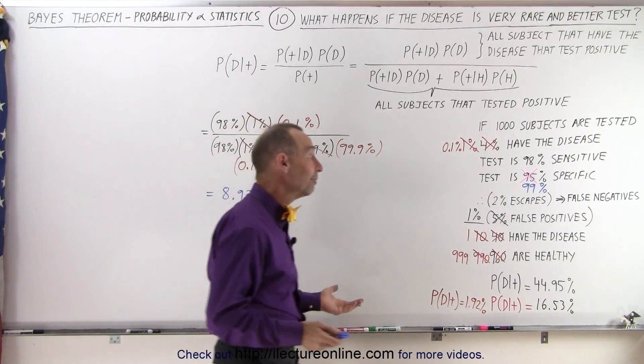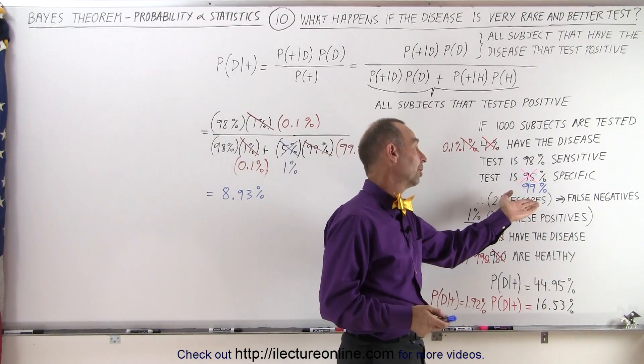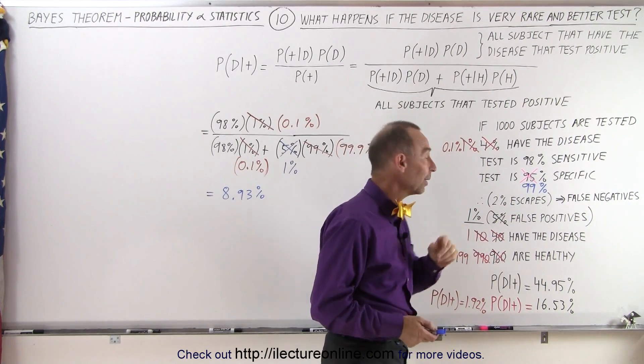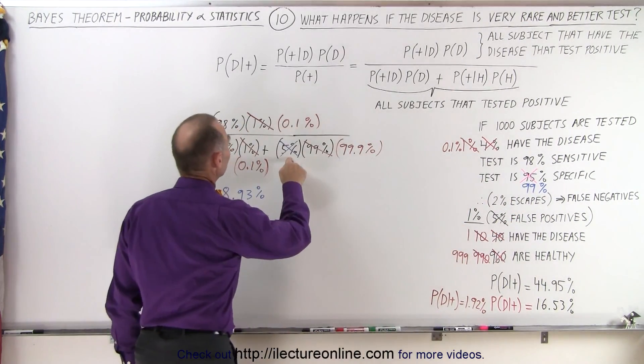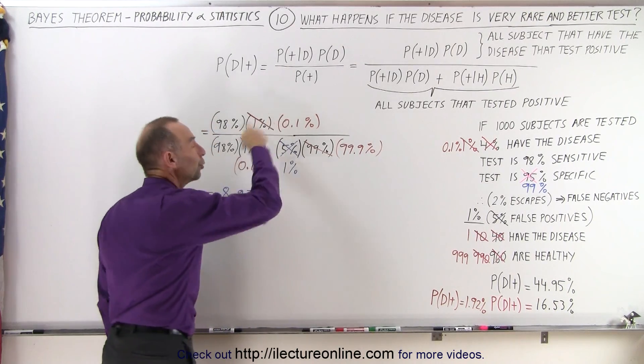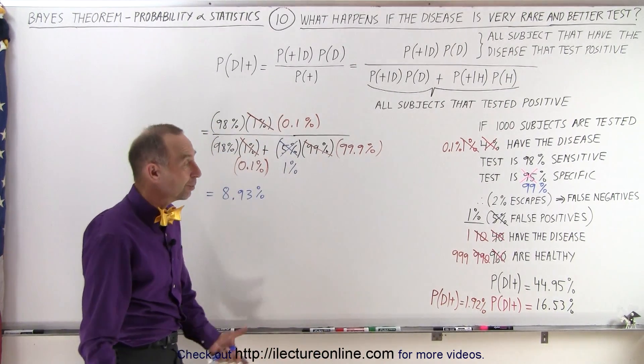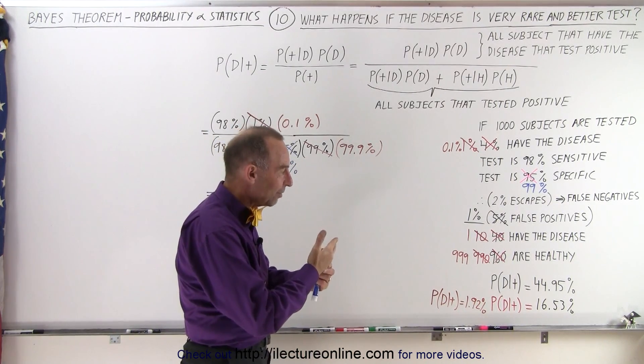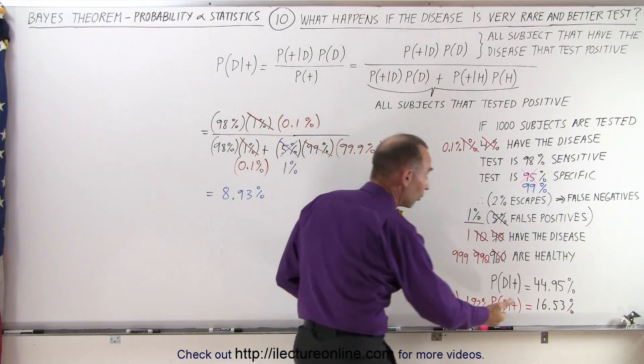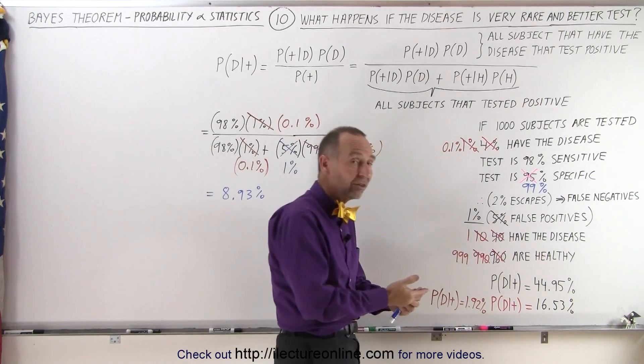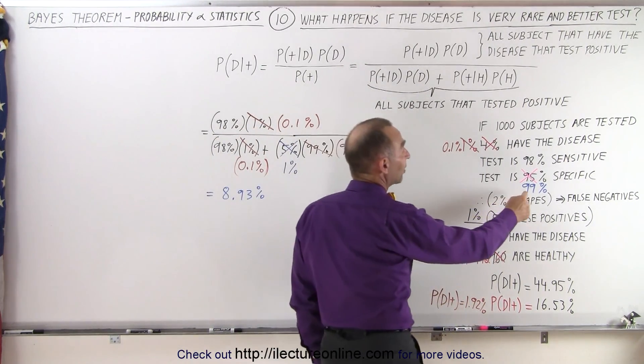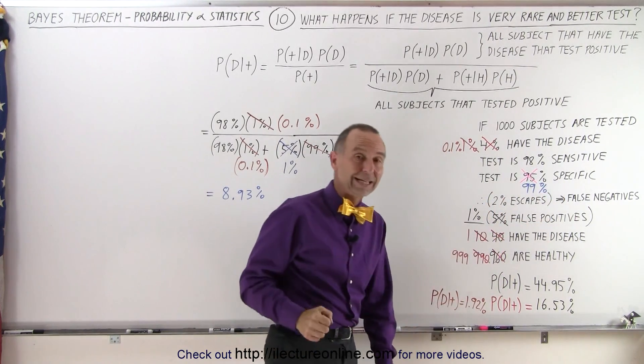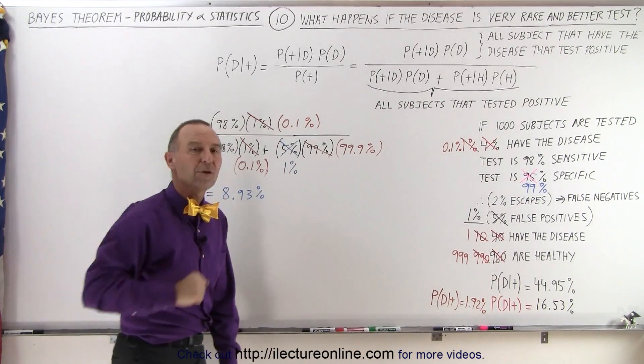Another thing we can say is, what if we're a hundred percent sure that if you're healthy, the test comes out negative? Well, then what would change is this would go to zero and then the probability would go to 100 percent. Ultimately, if the number of false positives drops to zero, then the probability goes up to 100 percent.